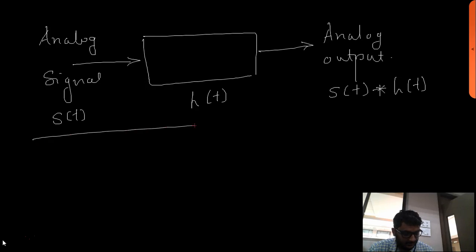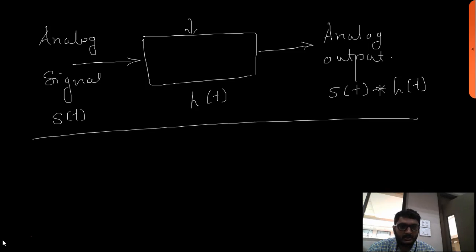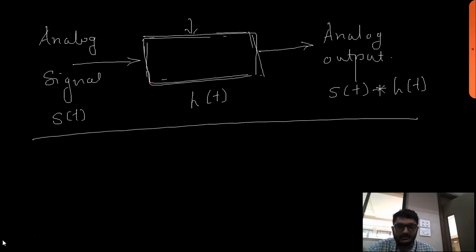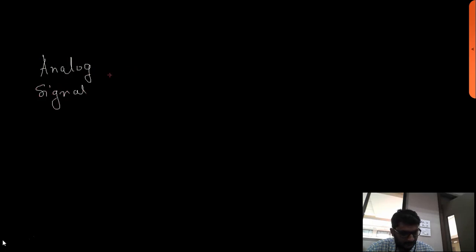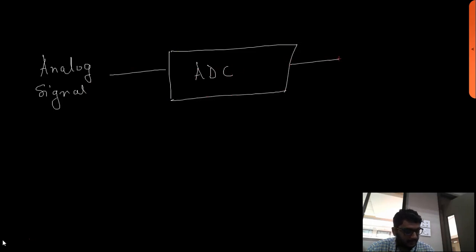This is the block diagram of analog signal processing. In this block there has to be digital processing, so that we can call this processing as digital signal processing. Before going to digital processing, first we need to convert an analog signal into a digital signal. This analog signal will be given to an A-to-D converter and we are going to get a digital signal.